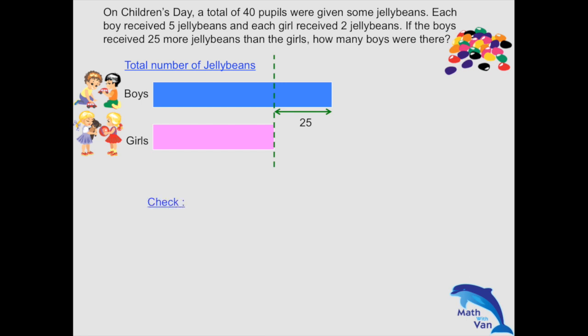So if I know there were 25 girls, then there would be 15 boys — 40 take away 25. And with that, we've answered the question. Before we finalize, let's do a quick check using the calculator: 15 boys — 15 times 5 minus bracket 25 times 2 — gives a difference of 25. So that's the answer.